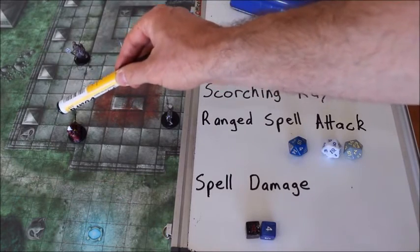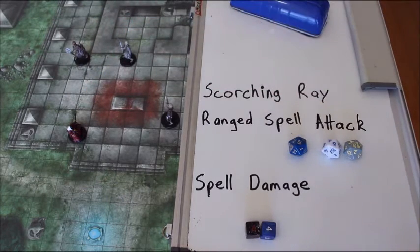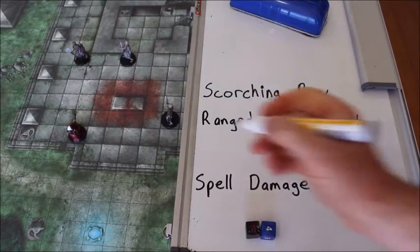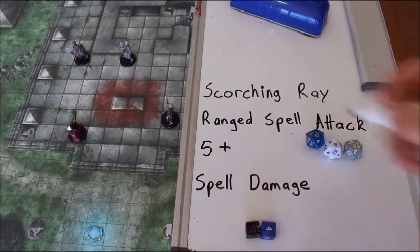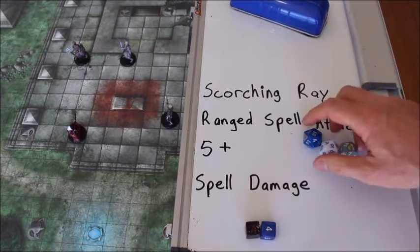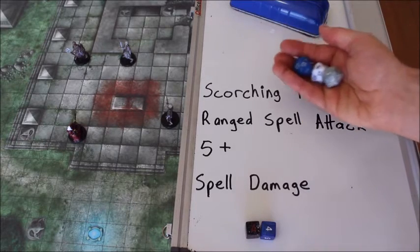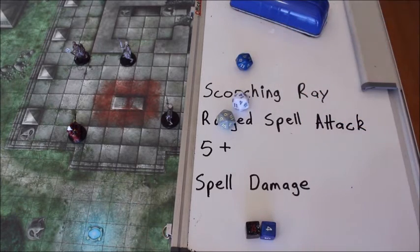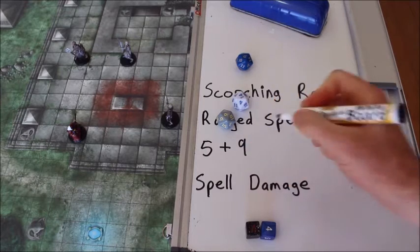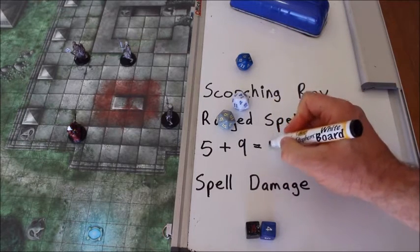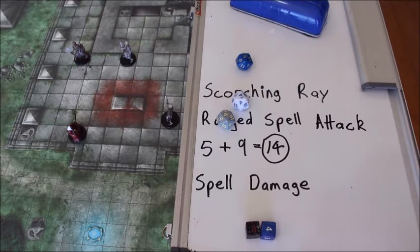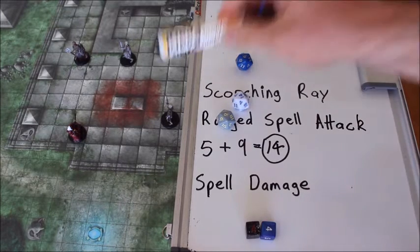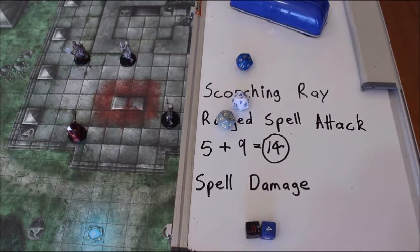The wizard will target all three skeletons, although he could target just one. He has a ranged spell attack modifier or bonus of five, and I need to roll three dice — three attacks, three rays. He gets a nine, so nine plus five is fourteen. Fourteen is equal to or greater than the armor class of a skeleton. The armor class of a skeleton is only thirteen, so that's one hit.